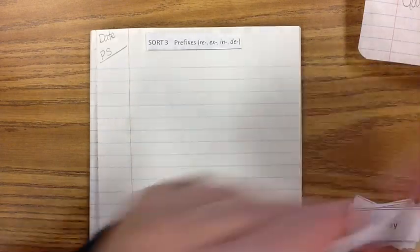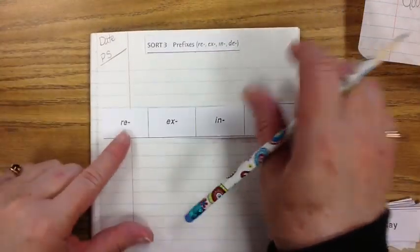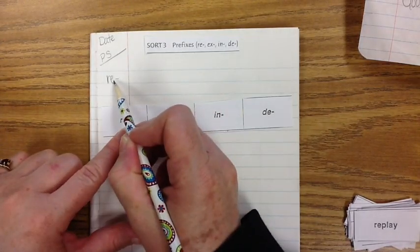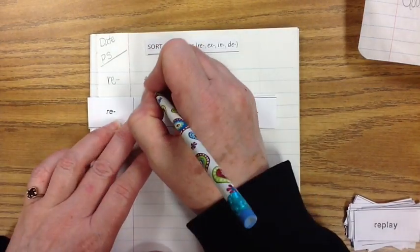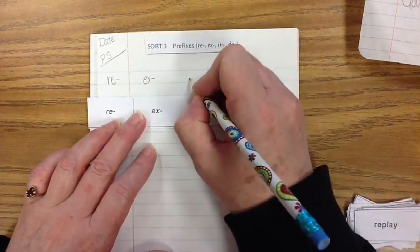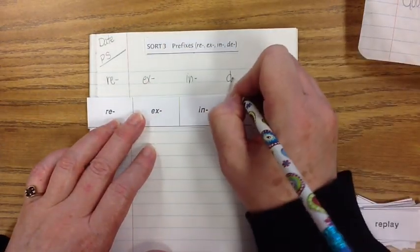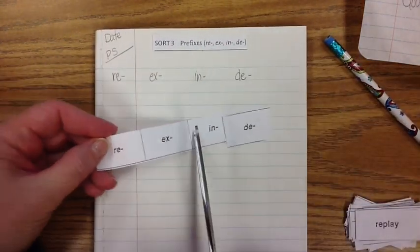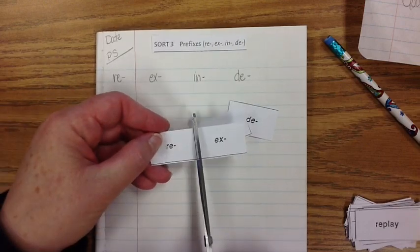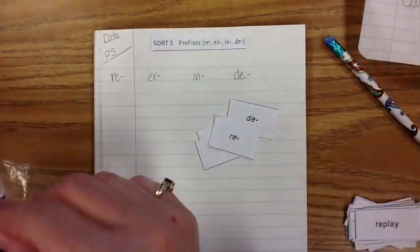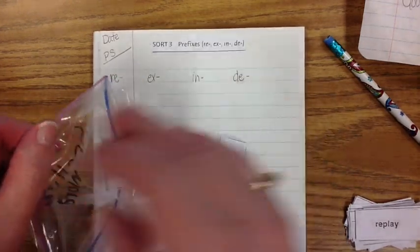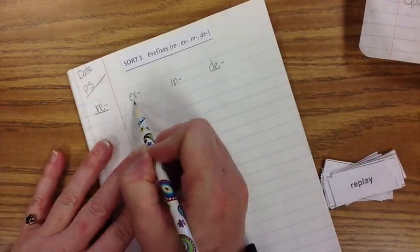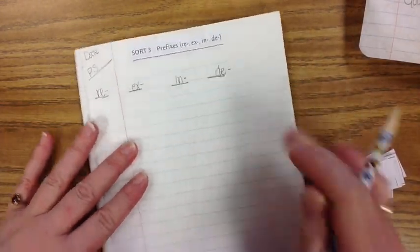Let's put in our exemplars. Our exemplars are re, ex, in, and de. Now remember, they're prefixes, so we put a hyphen there to show there's a word that's going to be attached.